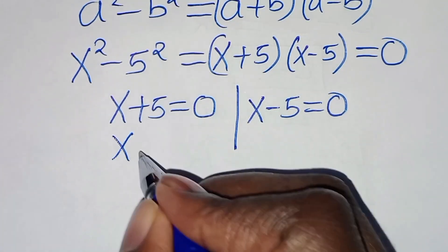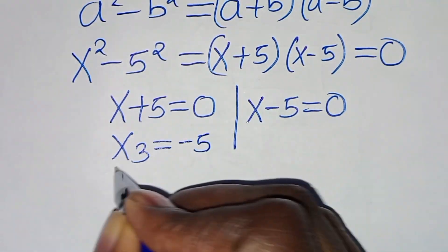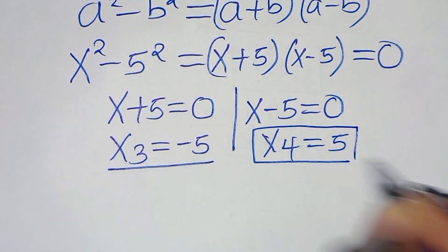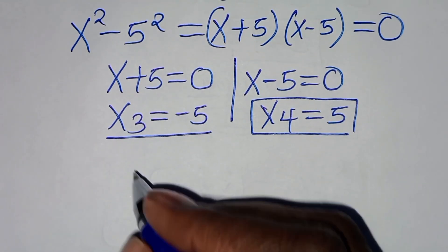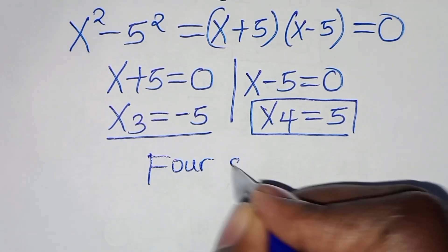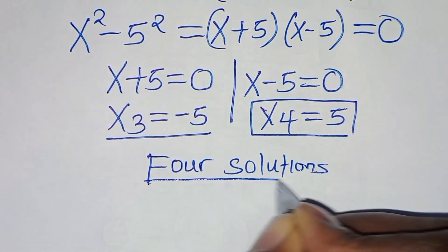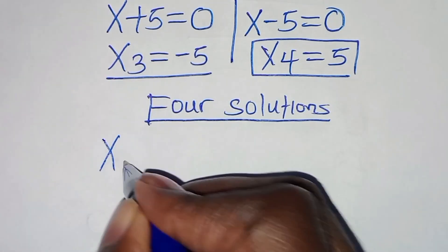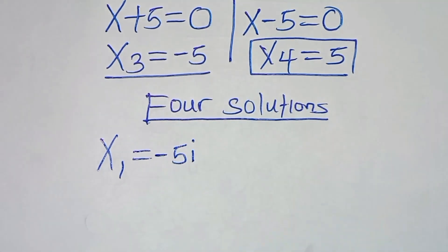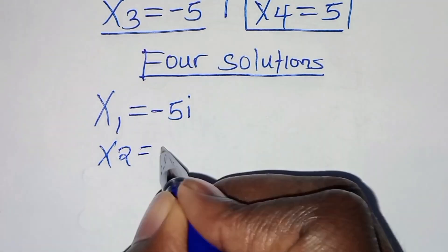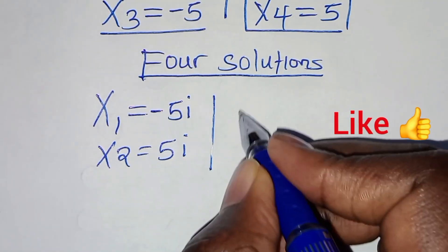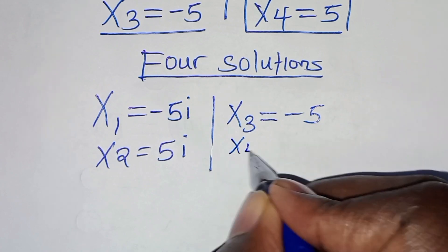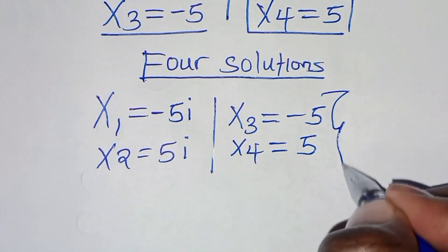So, this implies that x3 equals minus 5 and x4 equals 5. In this case, we have 4 solutions: x1 is equal to minus 5i, x2 is 5i, x3 is minus 5, and x4 is equal to 5. These are the four solutions.